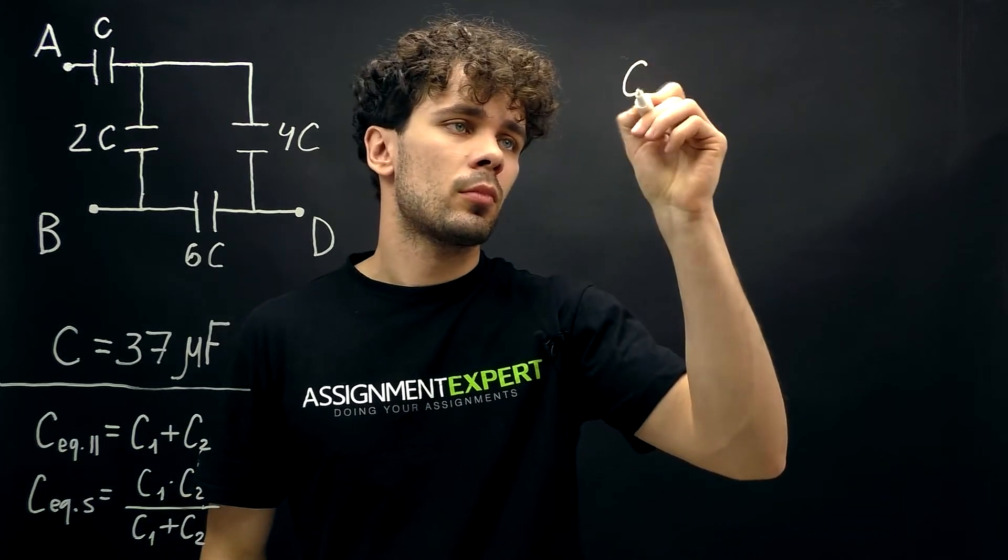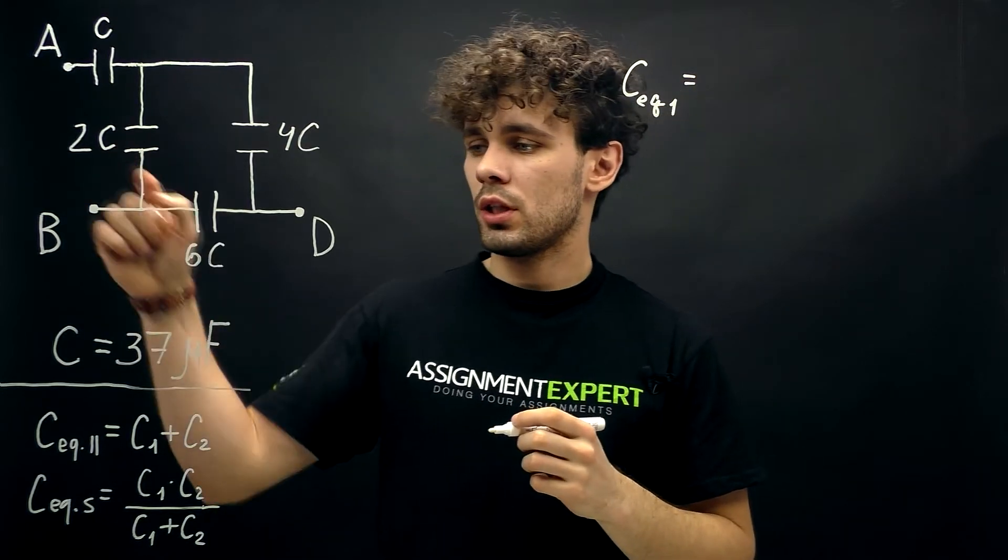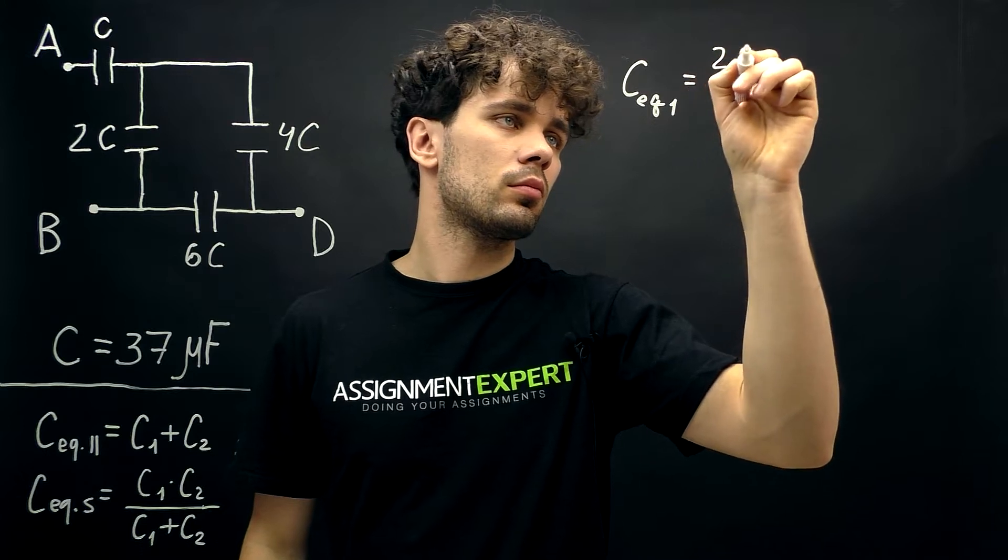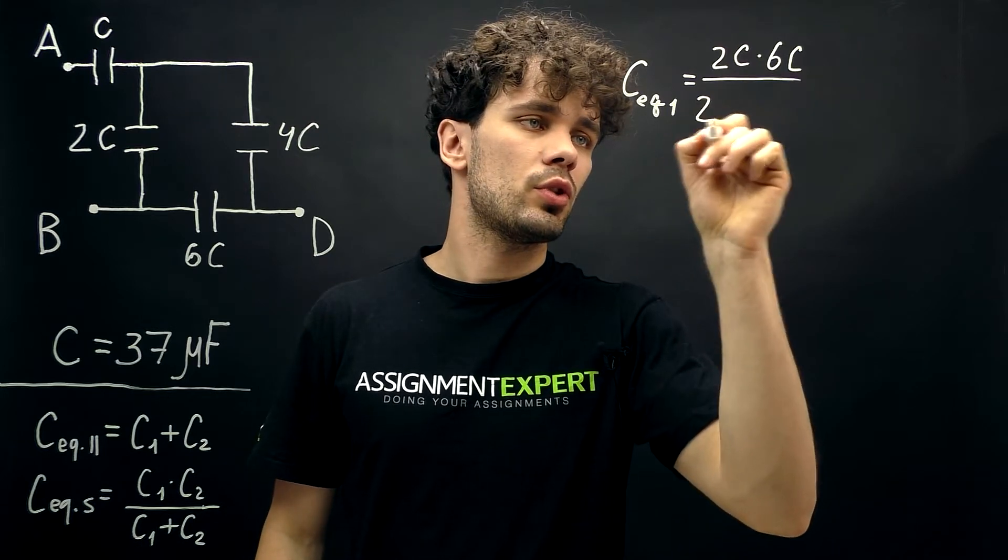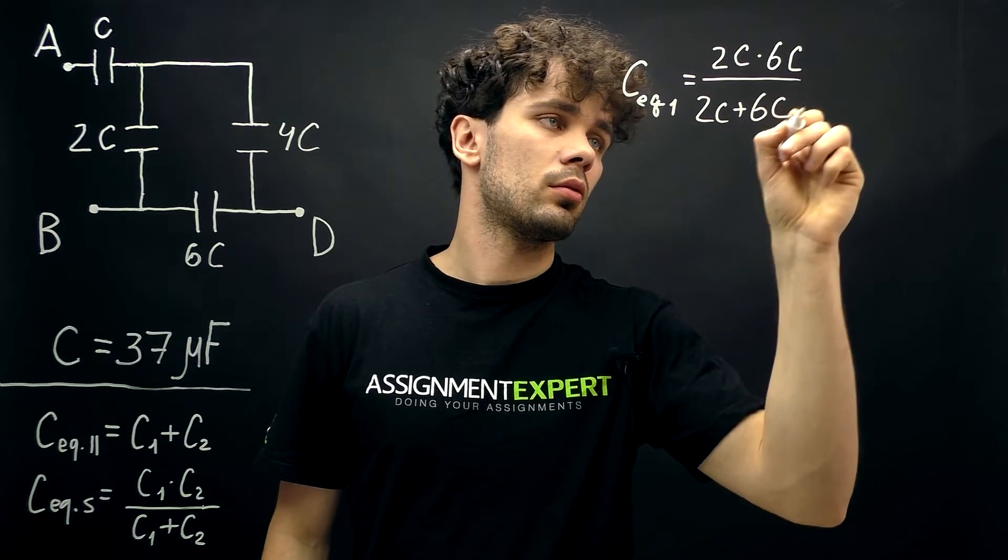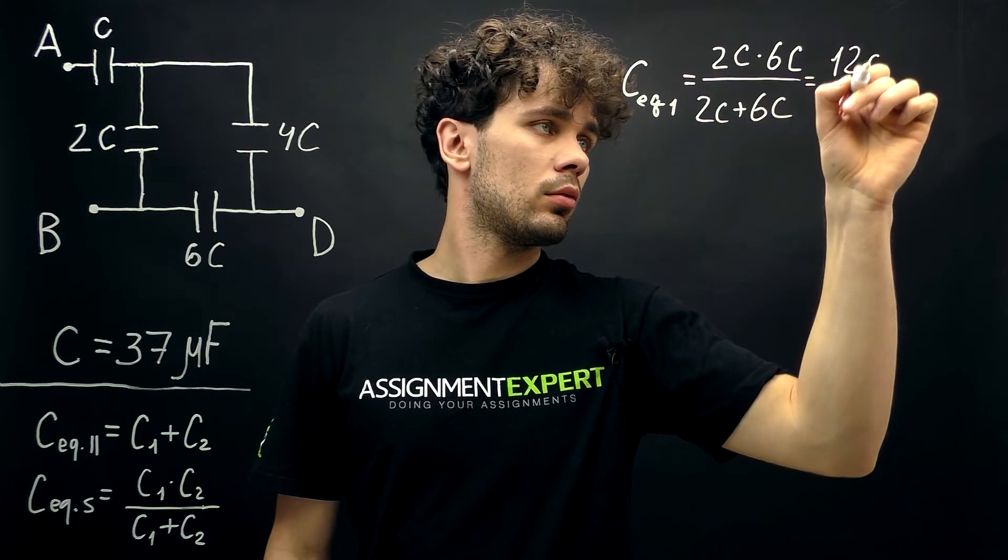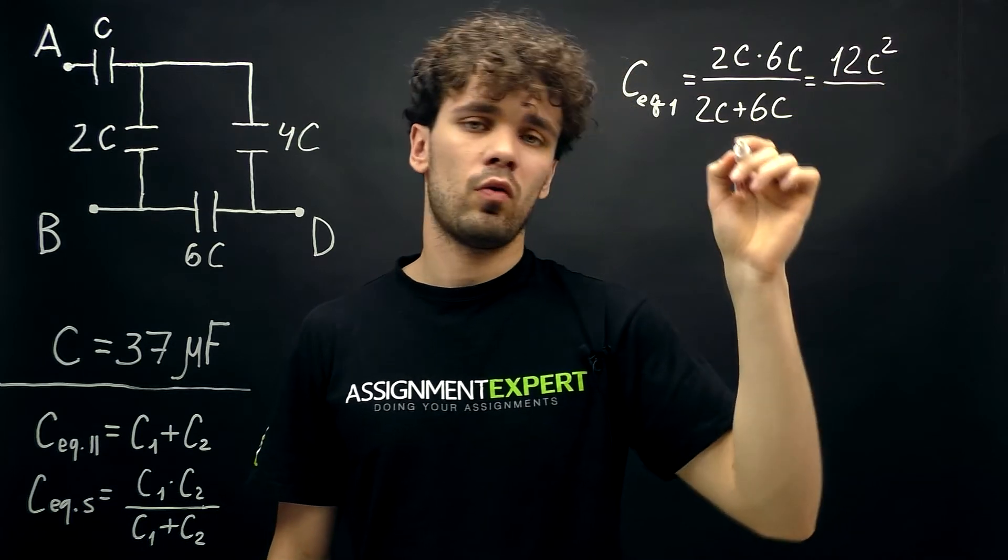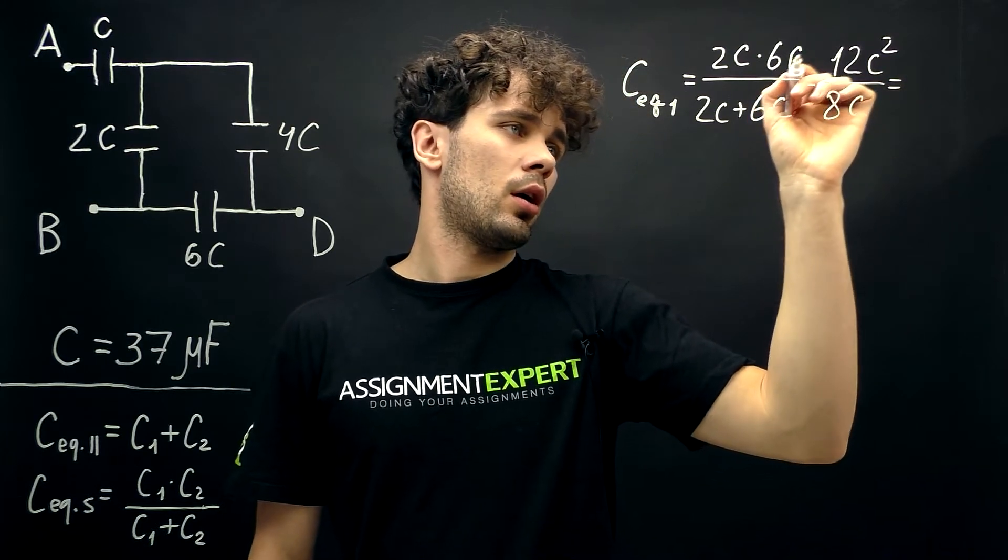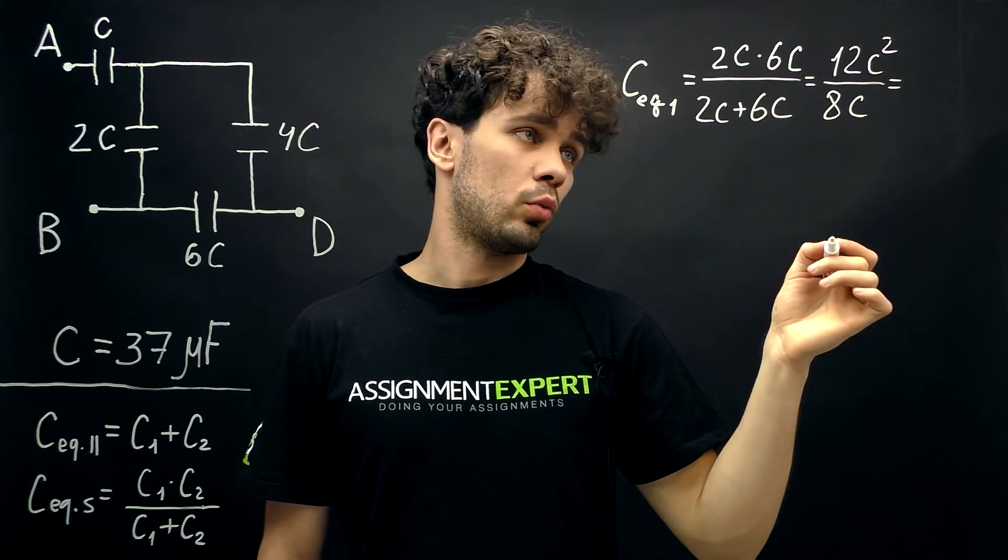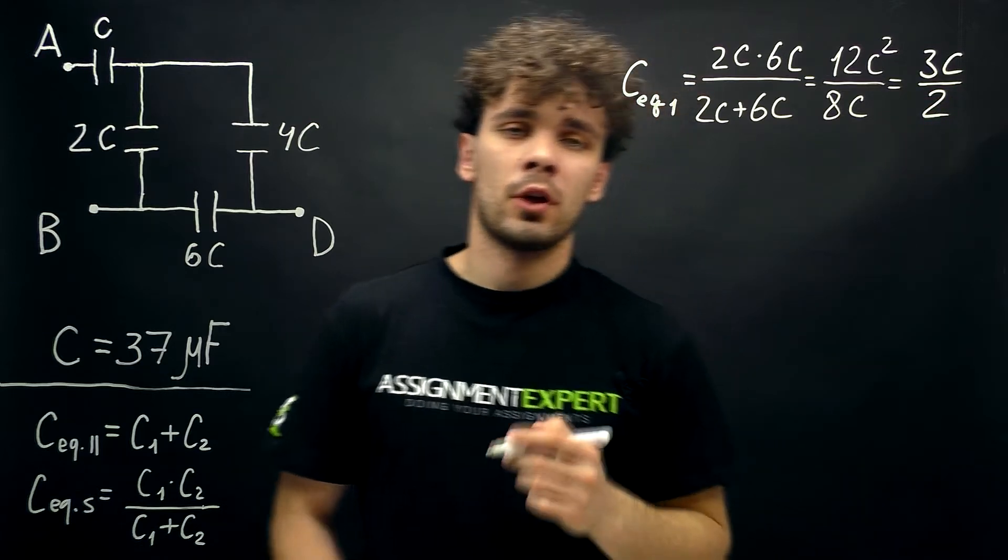So C equivalent first equals 2C times 6C over 2C plus 6C. So we get 12C squared over 8C. And this is 3C over 2.